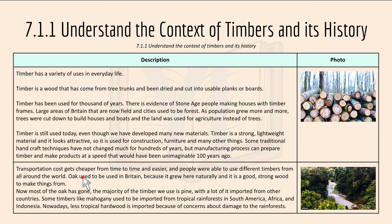Transportation costs have gotten cheaper and easier over time, and people were able to use different timbers from all around the world. Oak used to be used in Britain because it grew there naturally and is a good strong wood, but now most of the oak has gone. The majority of timber we use today is pine wood, with a lot of it imported from other countries.